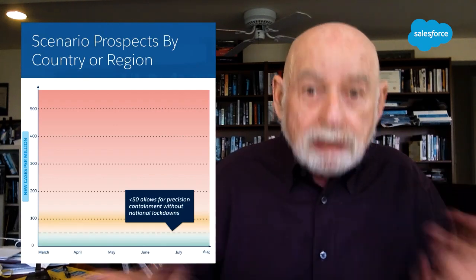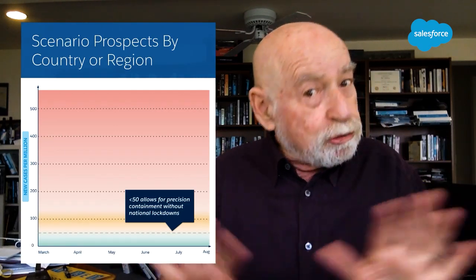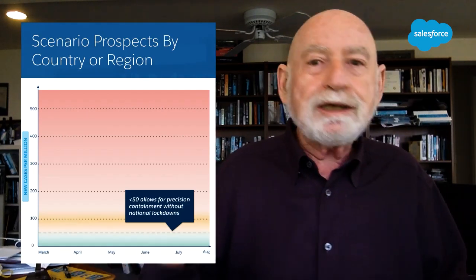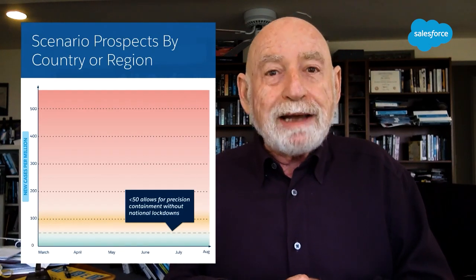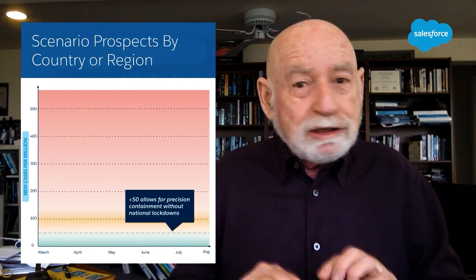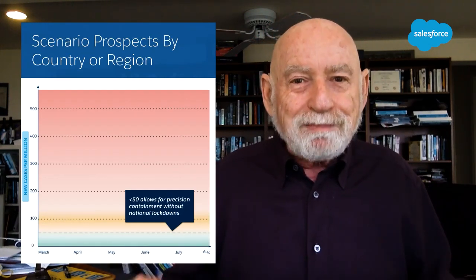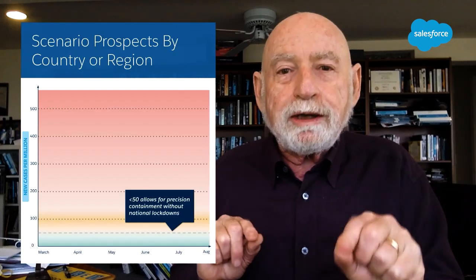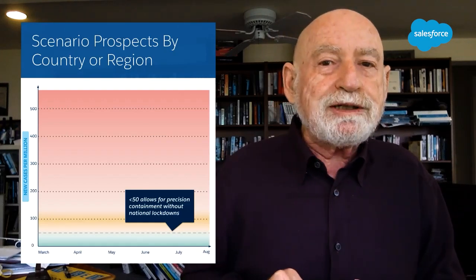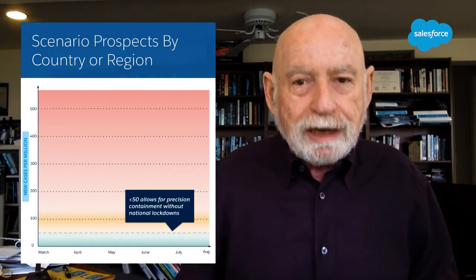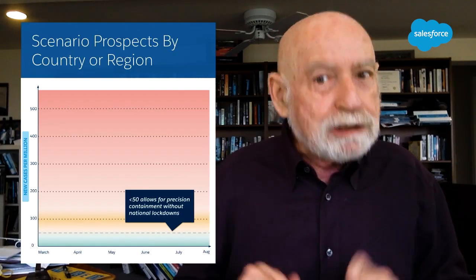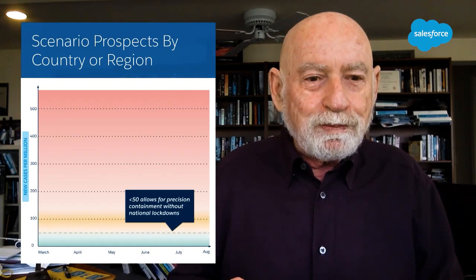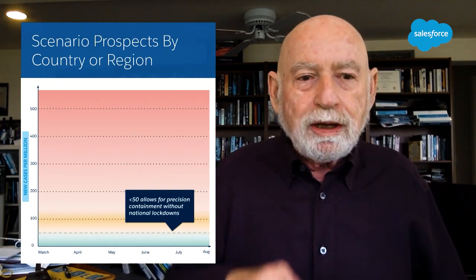Being in the green zone still implies measures — social measures like social distancing and mask wearing. It doesn't get you out of those, but it allows those kinds of measures, along with targeted, precise interventions, to contain the virus and allow you, especially, to gradually reopen. So that's the green zone.